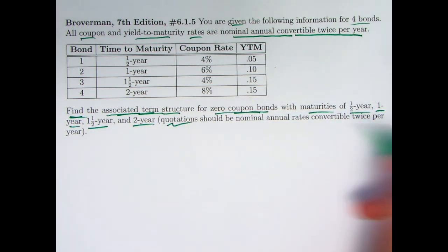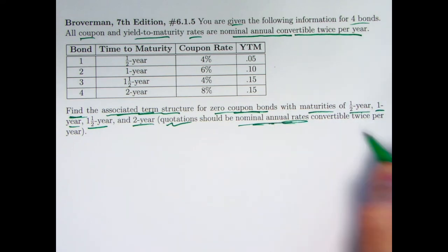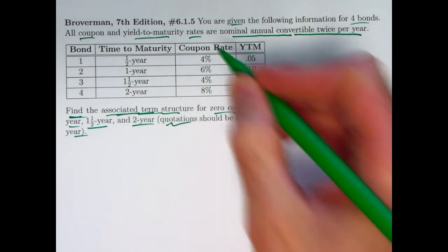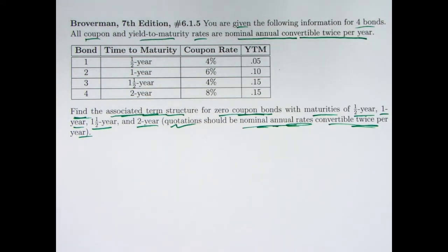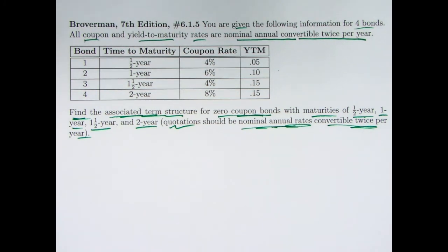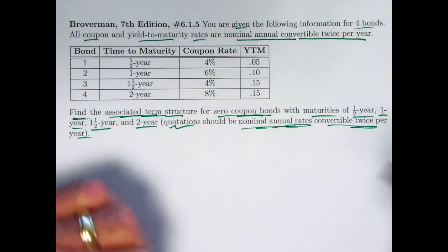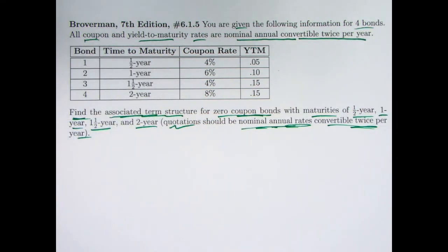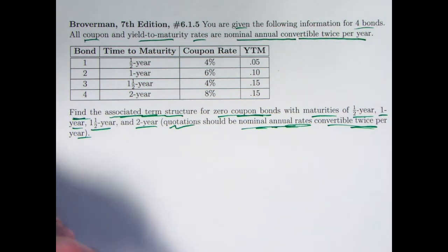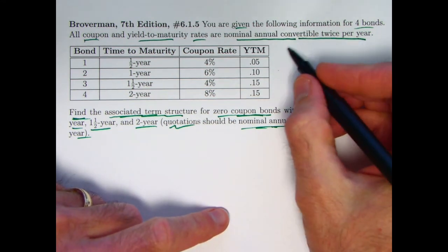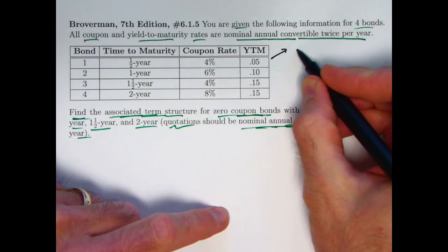Your final answers, your quotations, should be in nominal annual rates that are convertible twice per year, just like the rates you see here. It might seem a little unclear what to do here — you have to go back to a fundamental definition in the book. To start, let's draw timelines for these four bonds to think about what's going on, and let's pretend the redemption amount and face value is one to keep the numbers small.